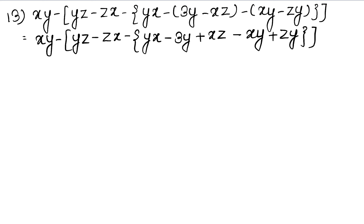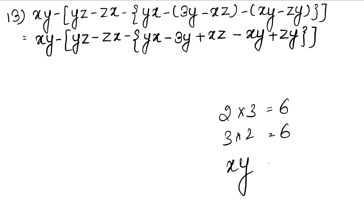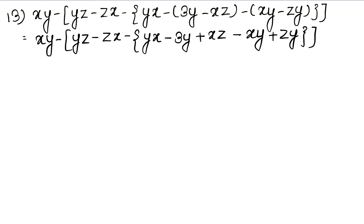Now, if there are any like terms, let's add or subtract them. Look at where YX or XY appear — they are the same thing. For example, 2 into 3 gives 6, and 3 into 2 also gives 6. So XY and YX are the same thing because there is multiplication between them. So if there is a plus and a minus, they cancel.